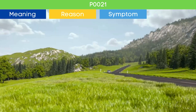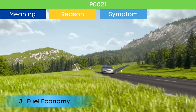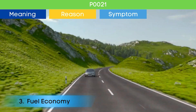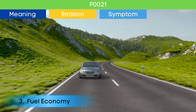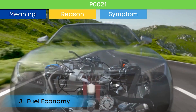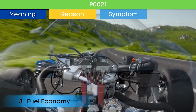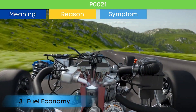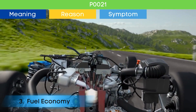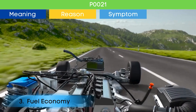Symptom number three: decreased fuel efficiency. Wrong valve opening and closing due to P0021 lead to incomplete combustion of fuel, which results in poor fuel economy.